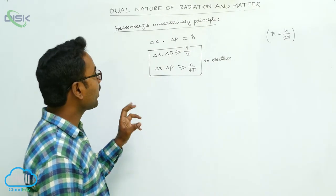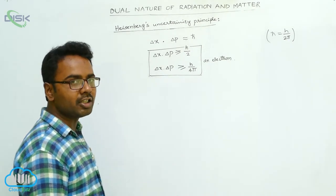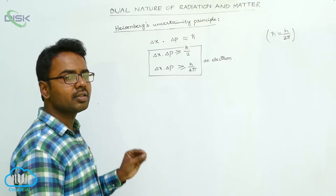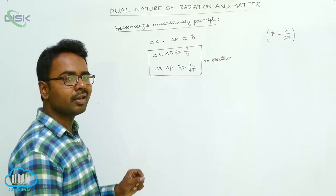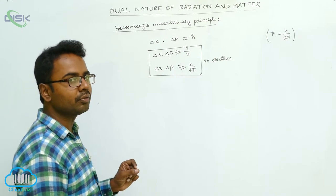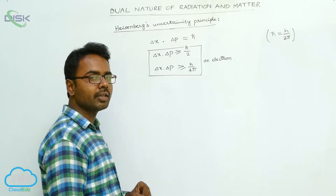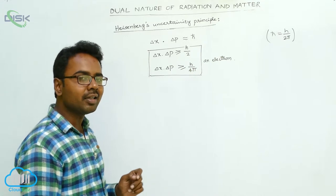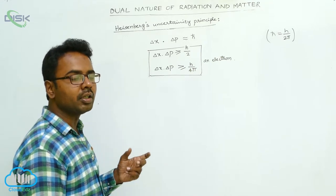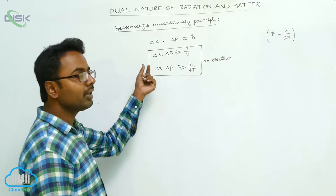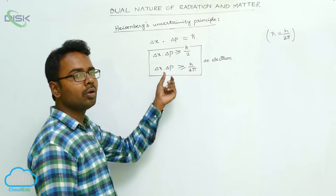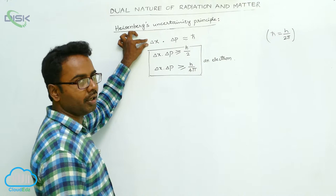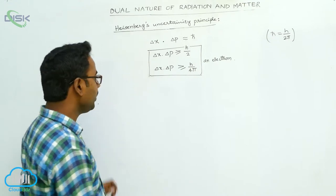According to Heisenberg's Uncertainty Principle, there is always some uncertainty in the specification of the position, that is delta x, and there is some uncertainty in the specification of the momentum, that is delta p. The product of delta x and delta p is always of the order of h-cut. This is applicable for any particle.